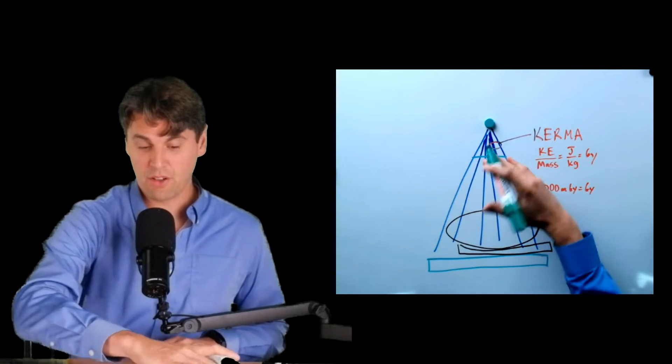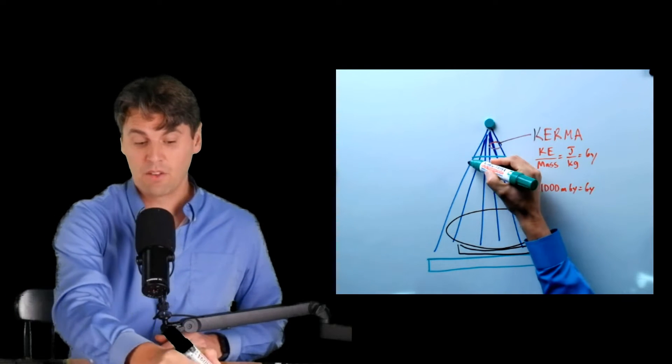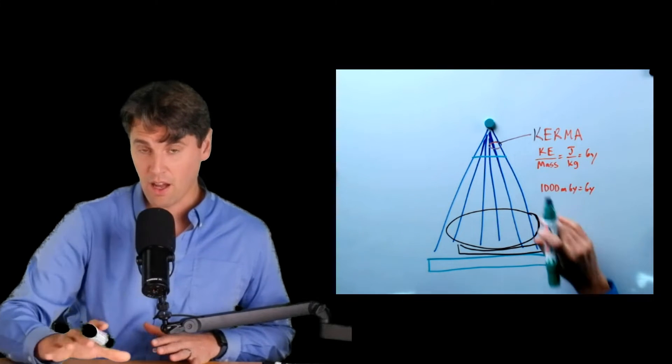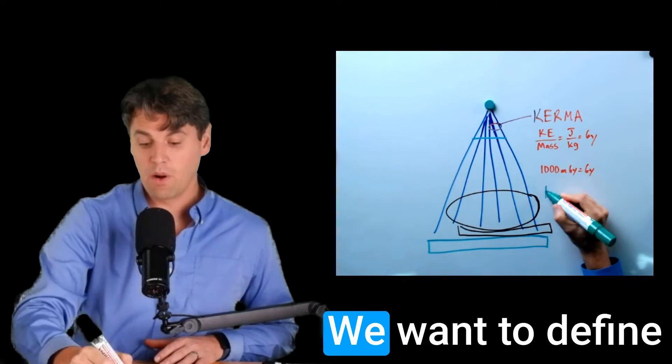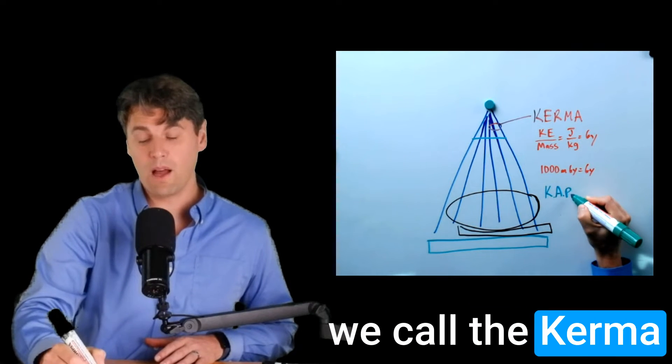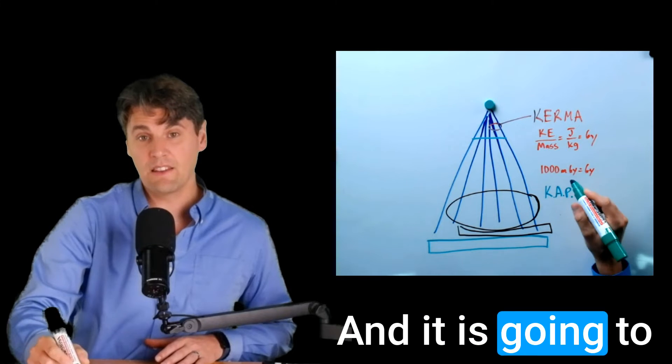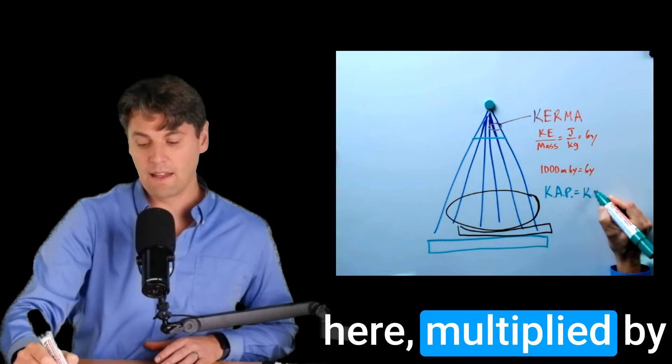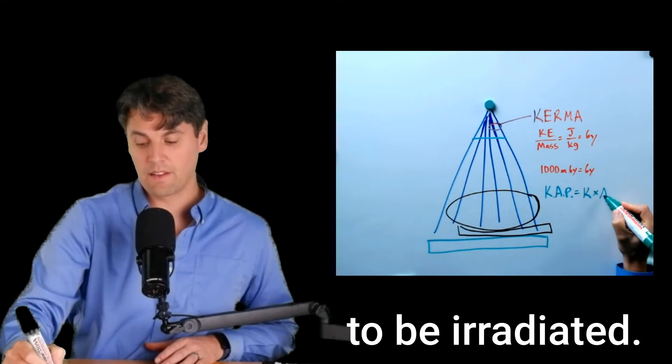Remember, we're just drawing this two-dimensional slice of our x-ray beam. So if we draw one line here, that's representing the area which is going to be irradiated by our x-ray beam. We want to define is this product that we call the Kerma area product, and it is going to be just that we talked about here multiplied by the area that's going to be irradiated.